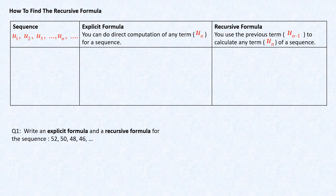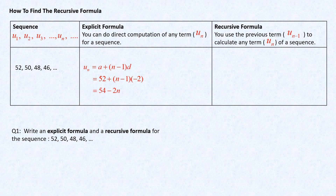Now we want to find the explicit and recursive formula for a given sequence. If you look at the sequence, it follows an arithmetic progression. Using the arithmetic progression formula, you can find term n for the sequence — this is your explicit formula.